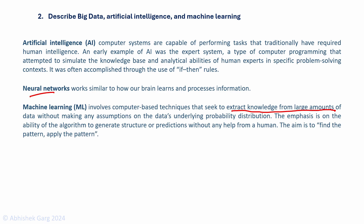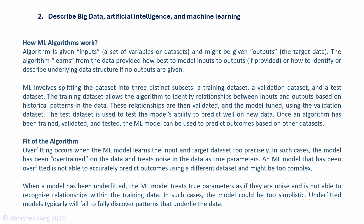The emphasis in machine learning is on the ability of the algorithm to generate structure or predictions without any help from a human. The aim is to find the pattern and apply the pattern. The algorithm is given inputs and could also be given outputs — the target data. The algorithm learns from the data provided how best to model the inputs to outputs, finds the relationship between inputs and outputs, and then uses that relationship to predict future values.